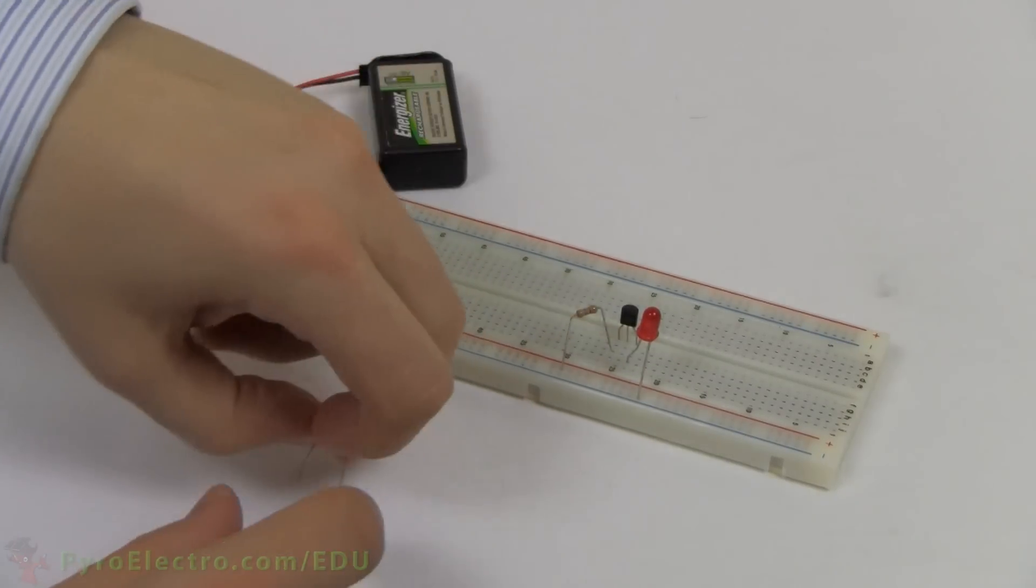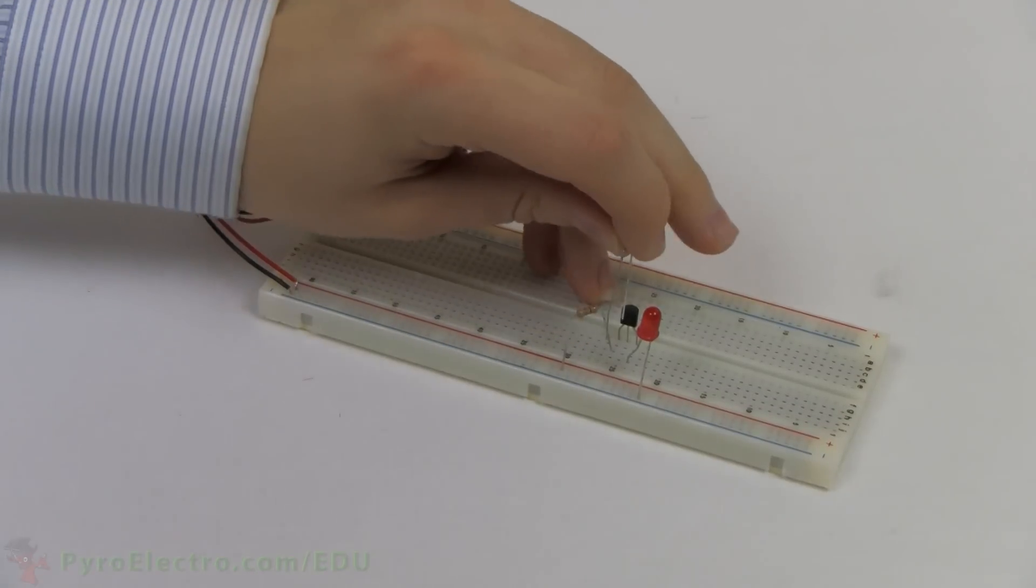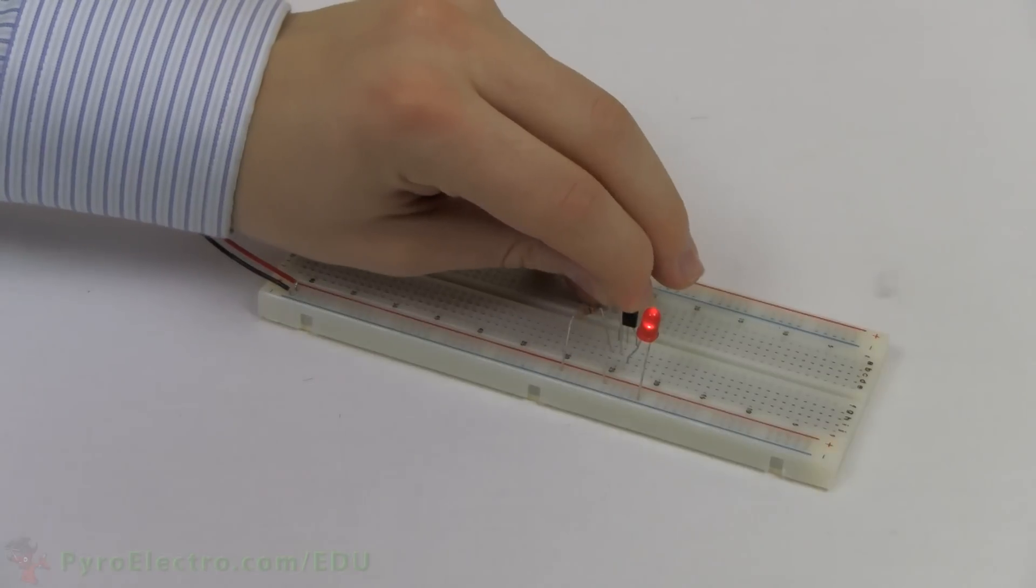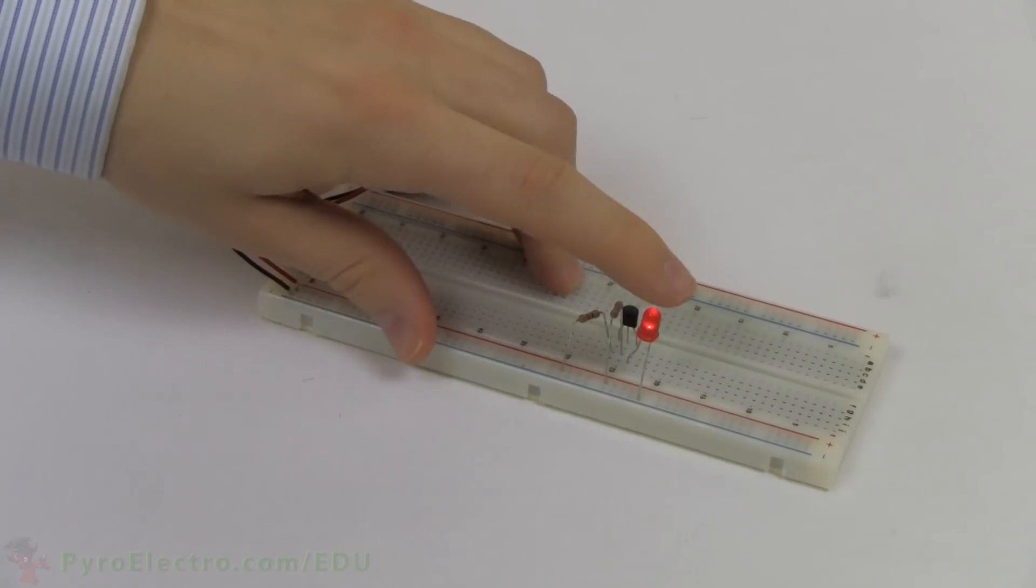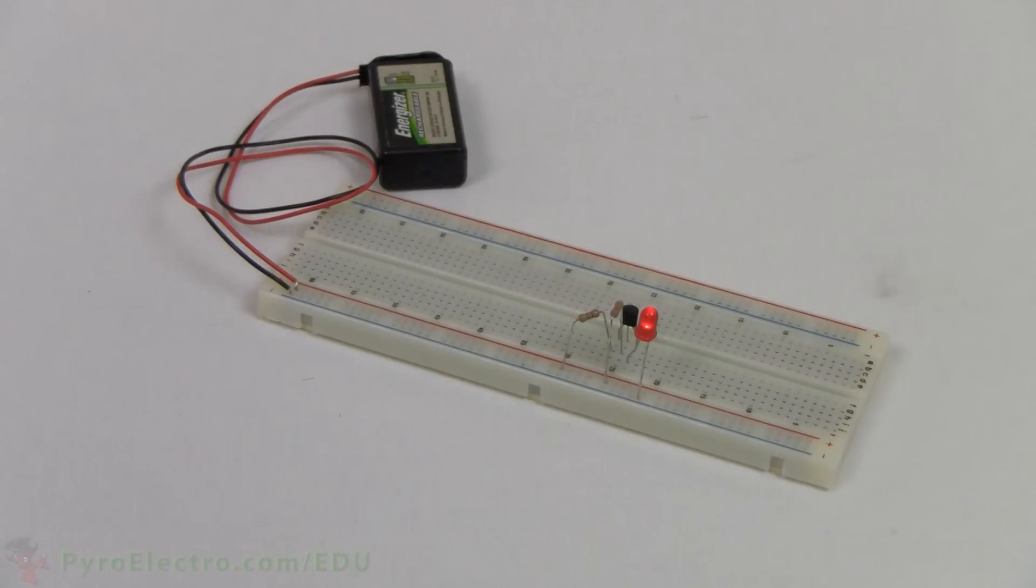Finally, take the other 470 ohm resistor and connect one side to the middle pin of the transistor, the base pin, and the other side directly to power. The LED should light up. This means the transistor is currently in an on state.